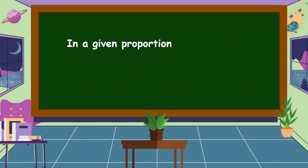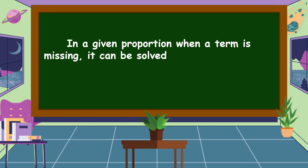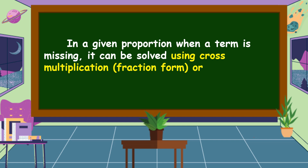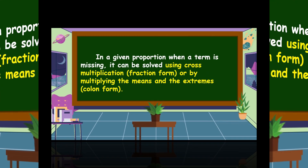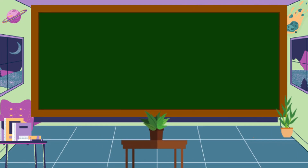In a given proportion, when a term is missing, it can be solved using cross multiplication in fraction form, or by multiplying the means and extremes in column form. Let's study the following examples to understand how to find the missing term in a proportion.